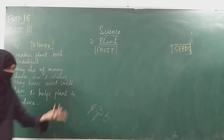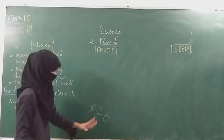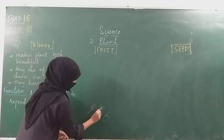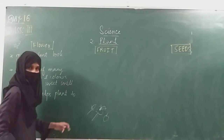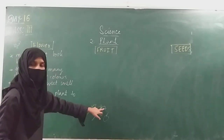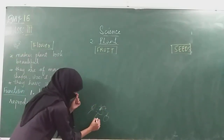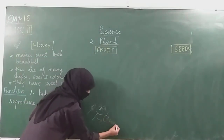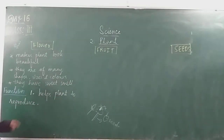From the flower, you will see a part with many small dots — those are called pollens. These pollens help in the growing of new plants. When the flower changes into a fruit, that fruit will have seeds inside, and those seeds also help in growing a new plant. That is why we say flowers help plants to reproduce.